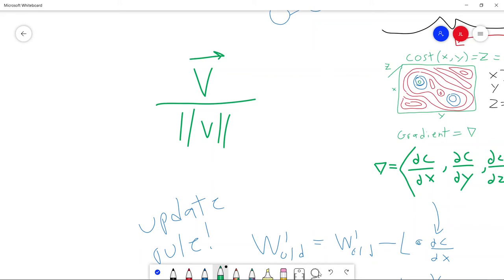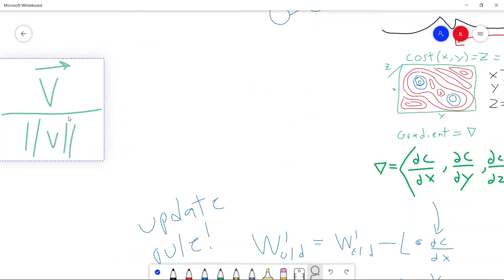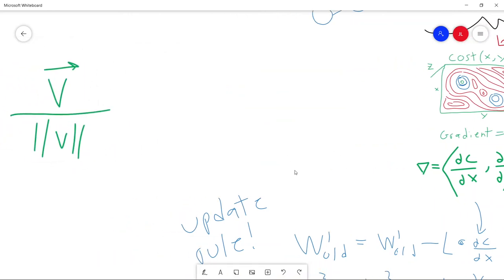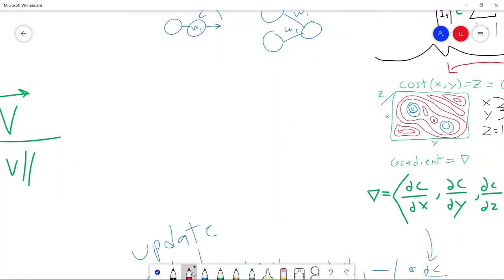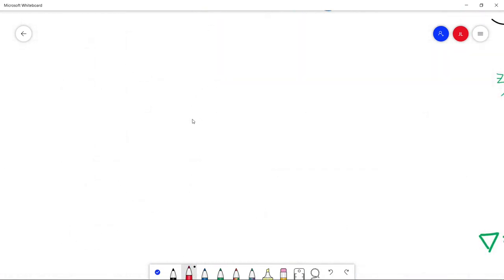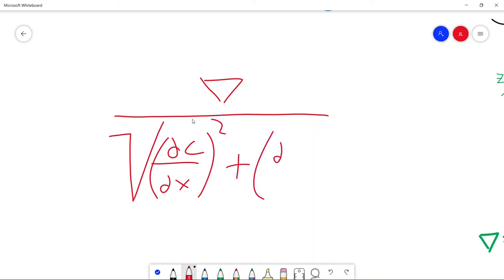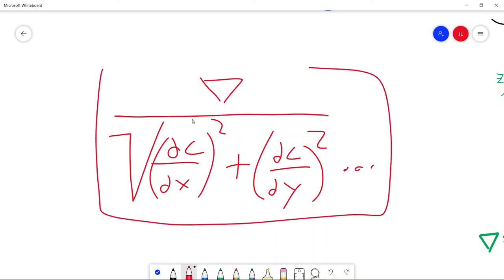Now, with our gradient vector, the one that we have down here, it's going to look like this. We take the gradient and divide it by the square root of each element. So partial derivative of the cost function with respect to x, and we square it and we add it to the partial derivative of the cost function with respect to y. And I'm sure you are now familiar with this pattern. That, of course, continues depending on how many parameters you have. And this will give you our unit gradient.